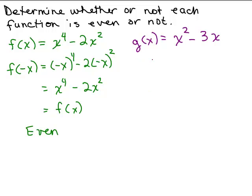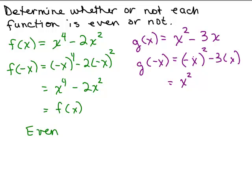Now let's do G(X). We plug in G(-X) by substituting -X for X. A (-X)² gives a positive X², and then we have minus 3 times (-X), which gives plus 3X. Is that the same as the original function? No — in the original G(X), we have minus 3X, but here we have plus 3X. These are not exactly the same, so this function is not even.